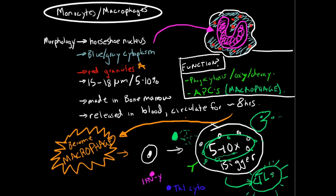In the next video, we're going to talk about dendritic cells, which are professional antigen-presenting cells, and the different types of communication they use to talk to T cells. Then we're going to talk about T cells and how different morphologies and expression of CD antigens help us differentiate between the different types.